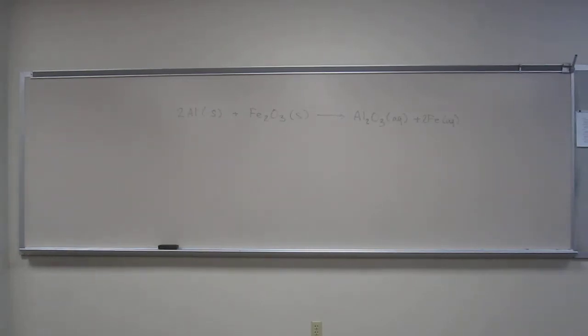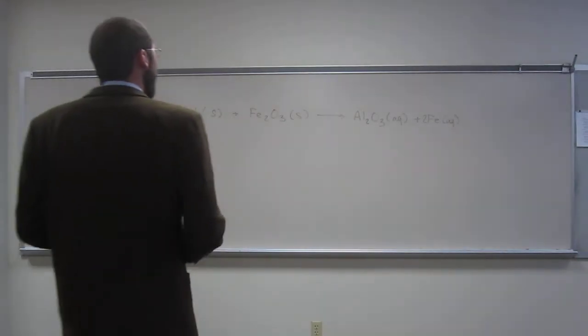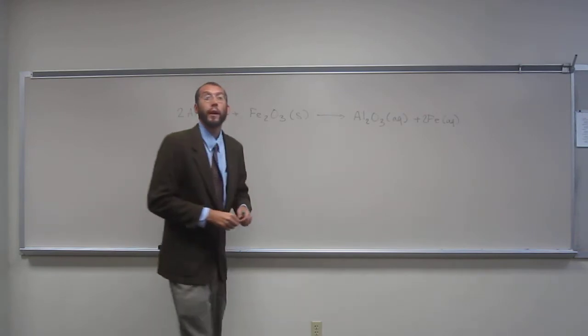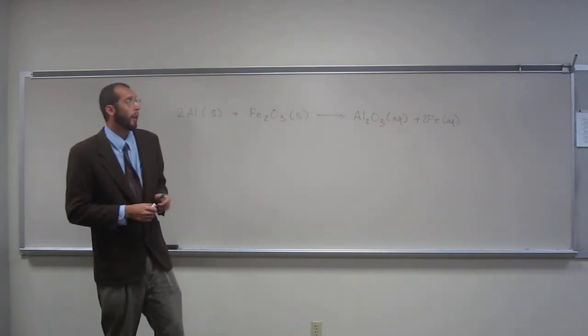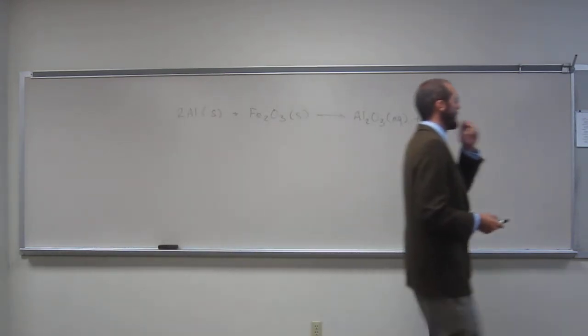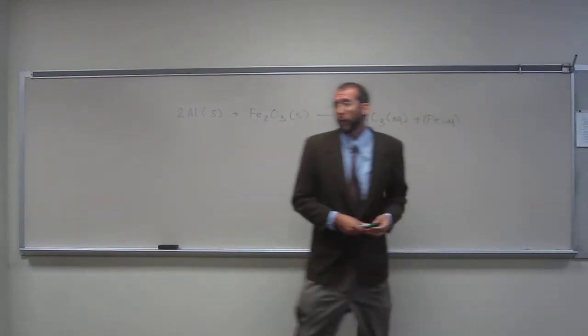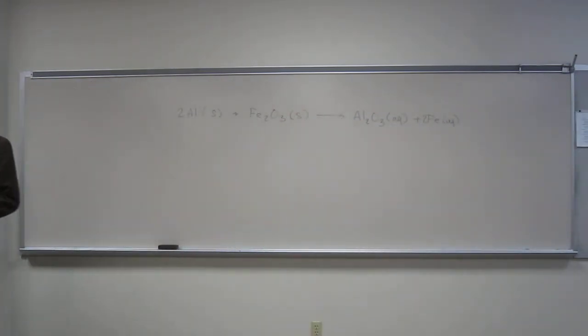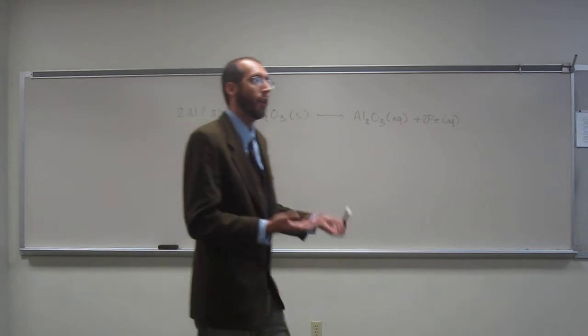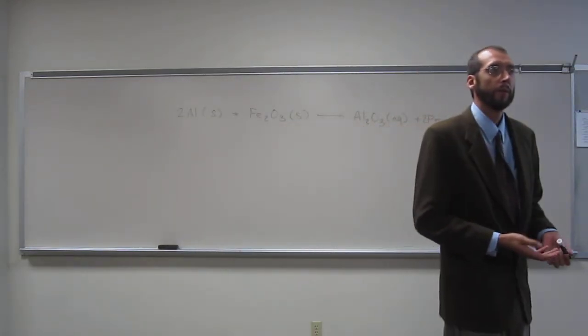Okay, so let's start here with a theoretical yield problem. So it says here the theoretical yield of iron was 30 grams, okay, so 30 grams of iron. Let's make up a question. How many grams of aluminum did we start with?